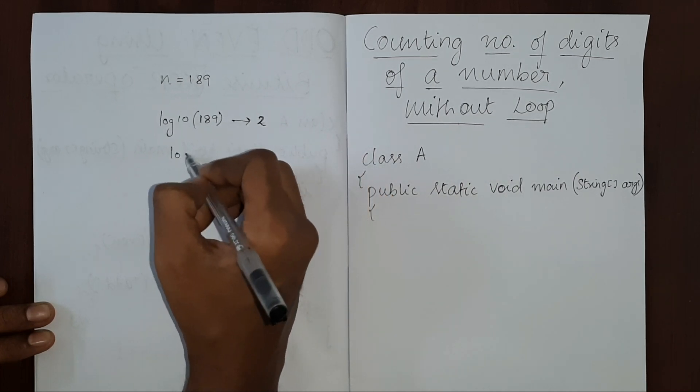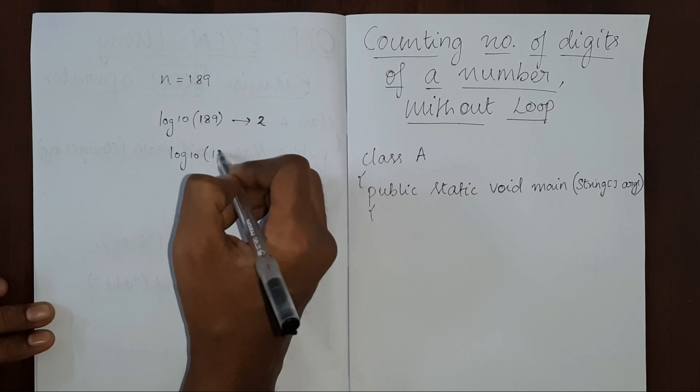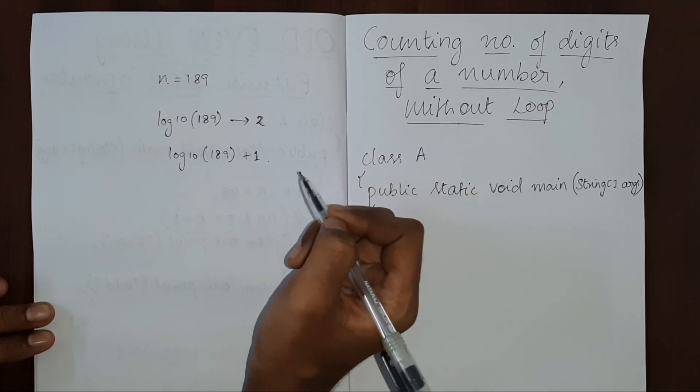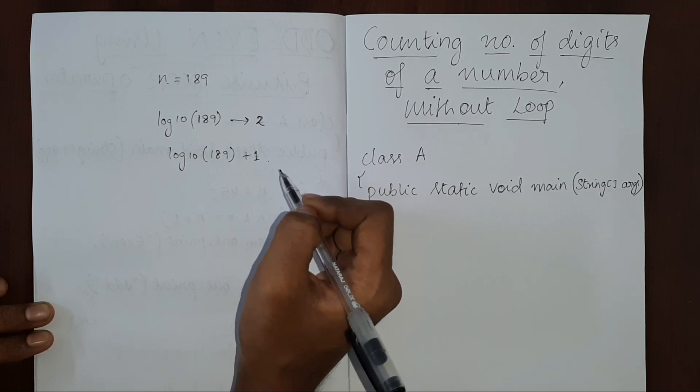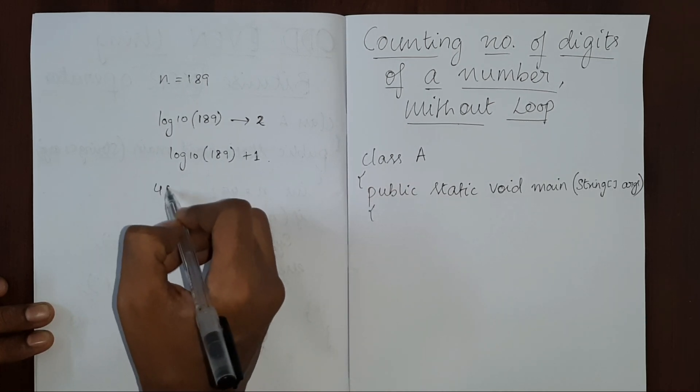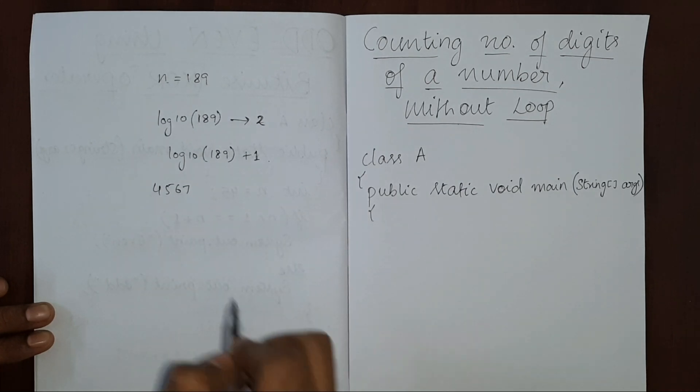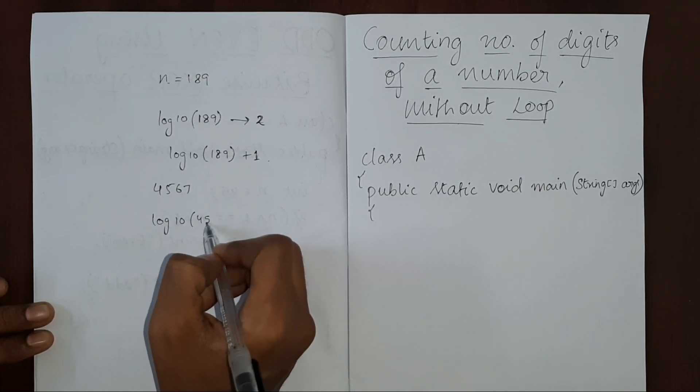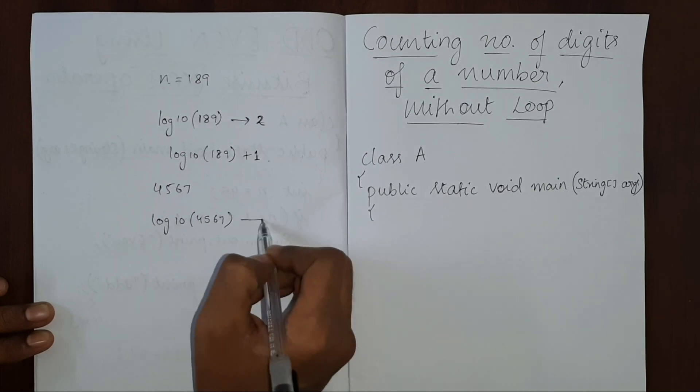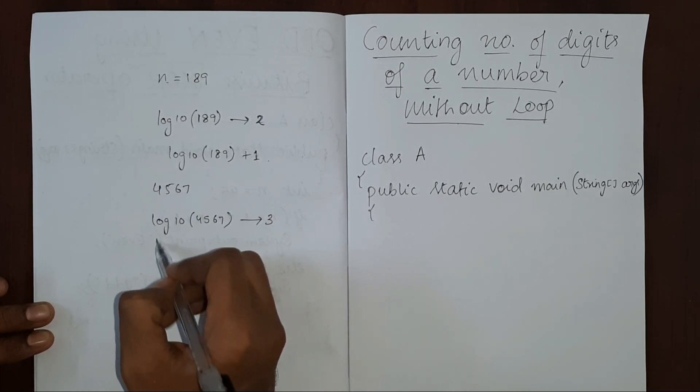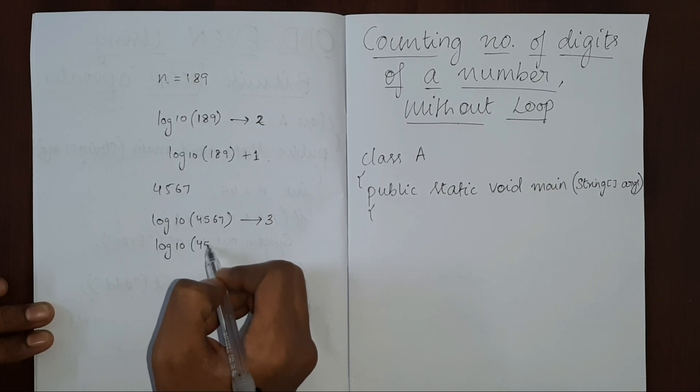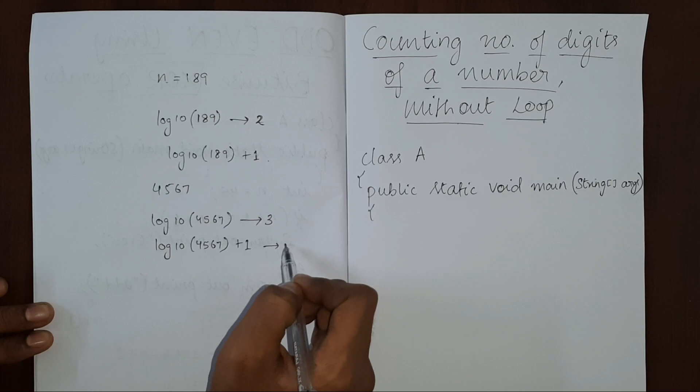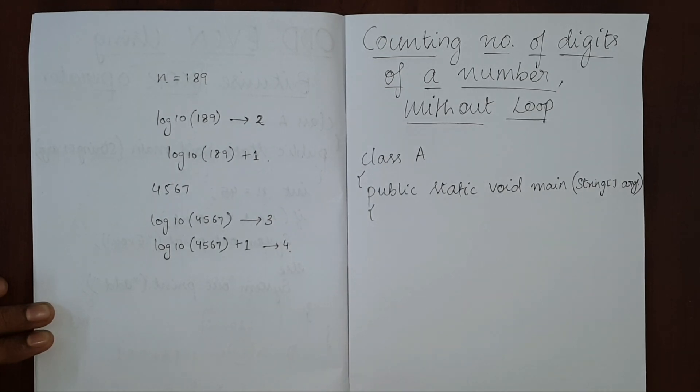So all we have to do is log 10 of 189 plus 1. So this will give you the number of digits. Say if the number is 4567, then if you use log 10 of 4567, it will result in 3. So you have to increment it by 1 to get the desired result.